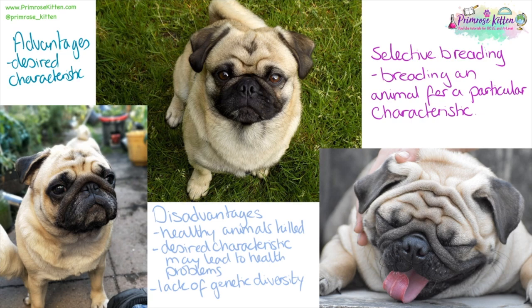The desired characteristic can also lead to long-term health problems for the animals. The pug, for example — because of the large number of folds on their face, it squashes their nose and gives them long-term breathing problems. Dogs like Labradors are very susceptible to arthritis, and dogs like Rhodesian Ridgebacks have a desired characteristic that is actually a mutation, so any dogs born without the Ridgeback can be put to sleep. Finally, there is a lack of genetic diversity within the population, which can lead to a lot of inbreeding — brothers and sisters bred to get the desired characteristic — leading to recessive bad mutations appearing more often and increased susceptibility to disease due to lack of genetic immunity.